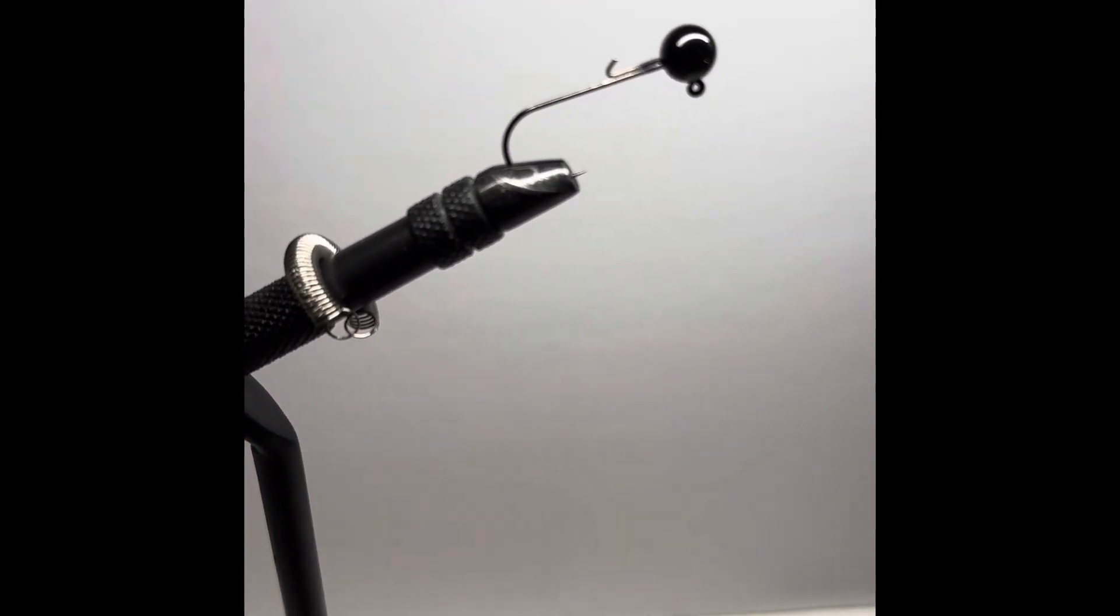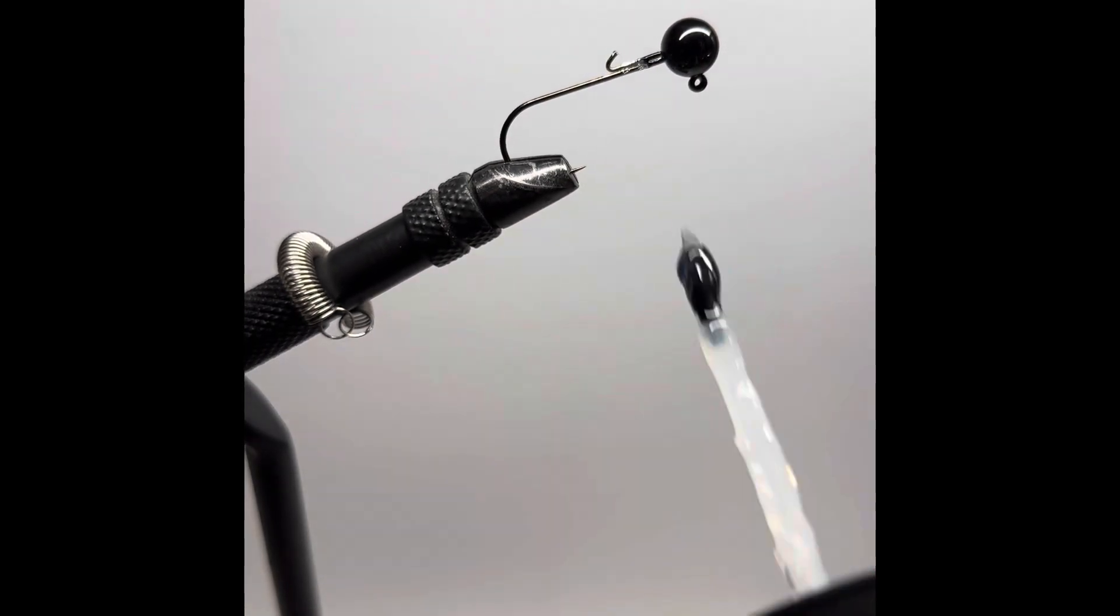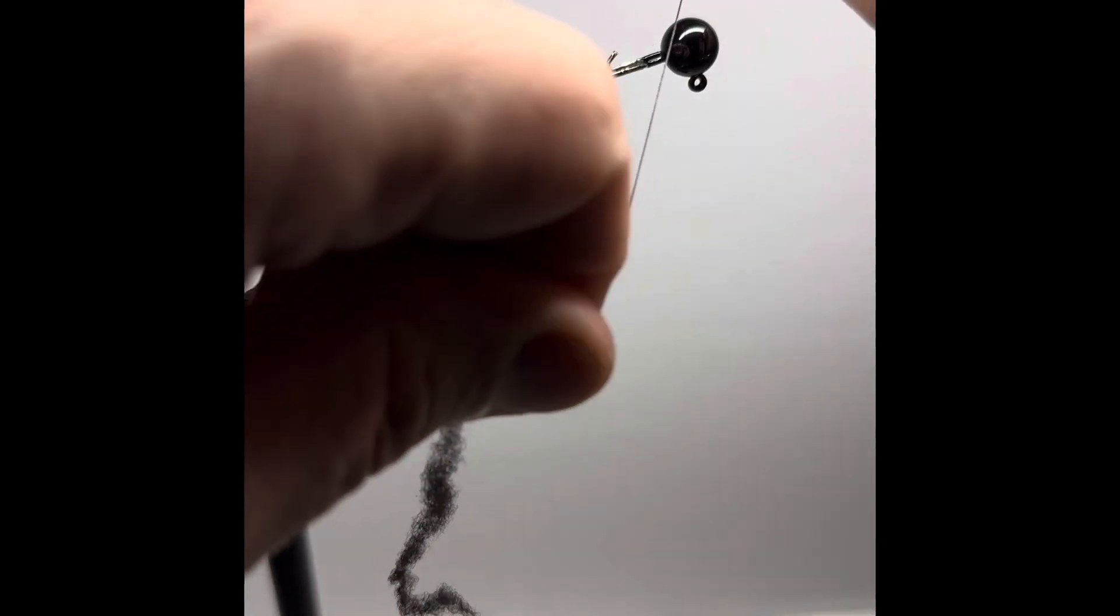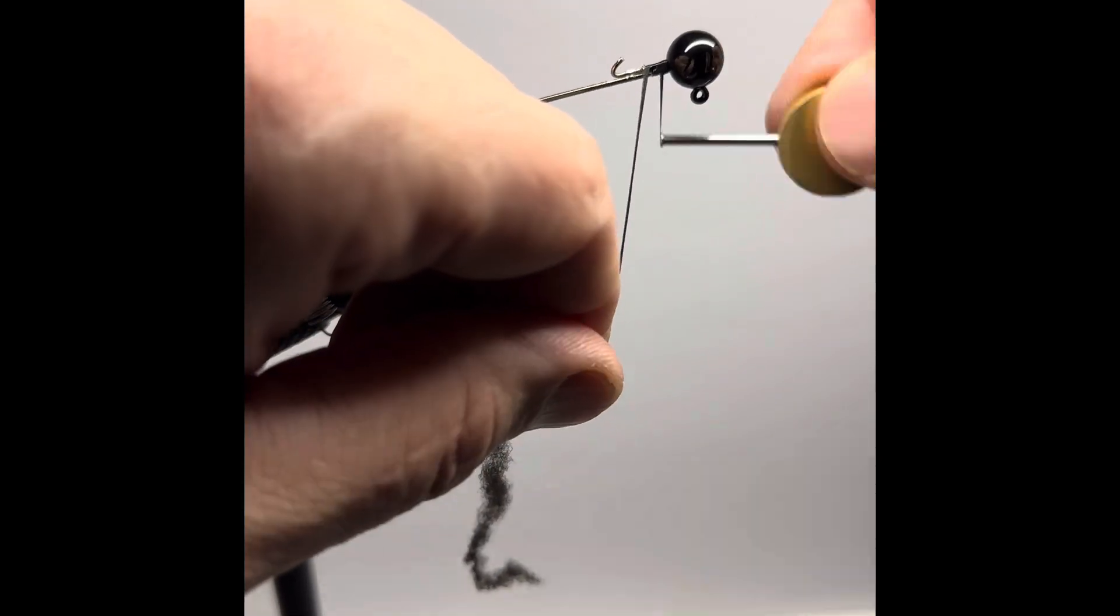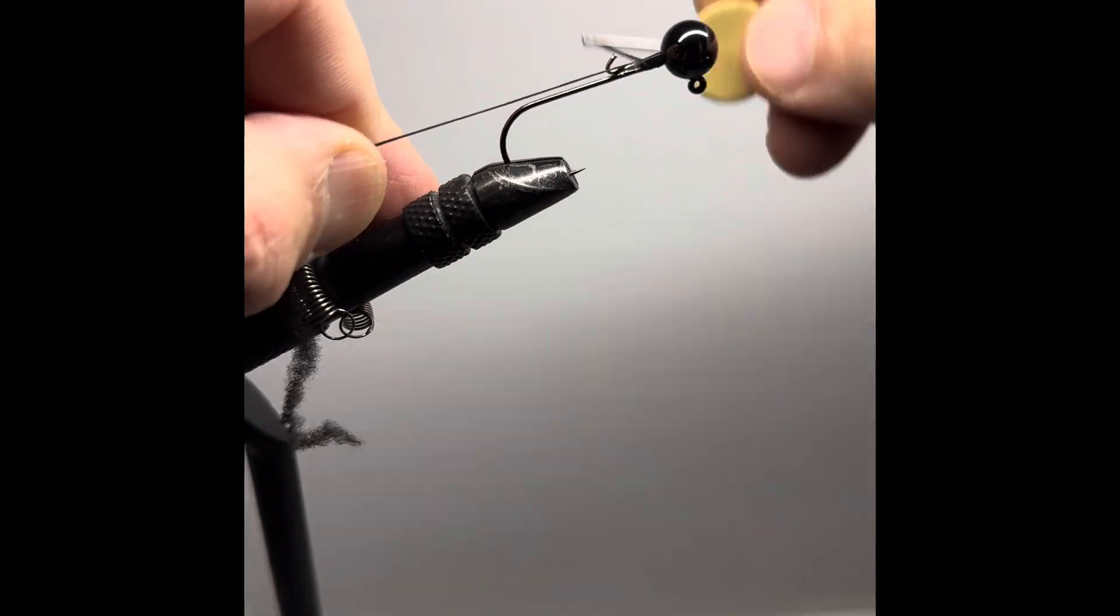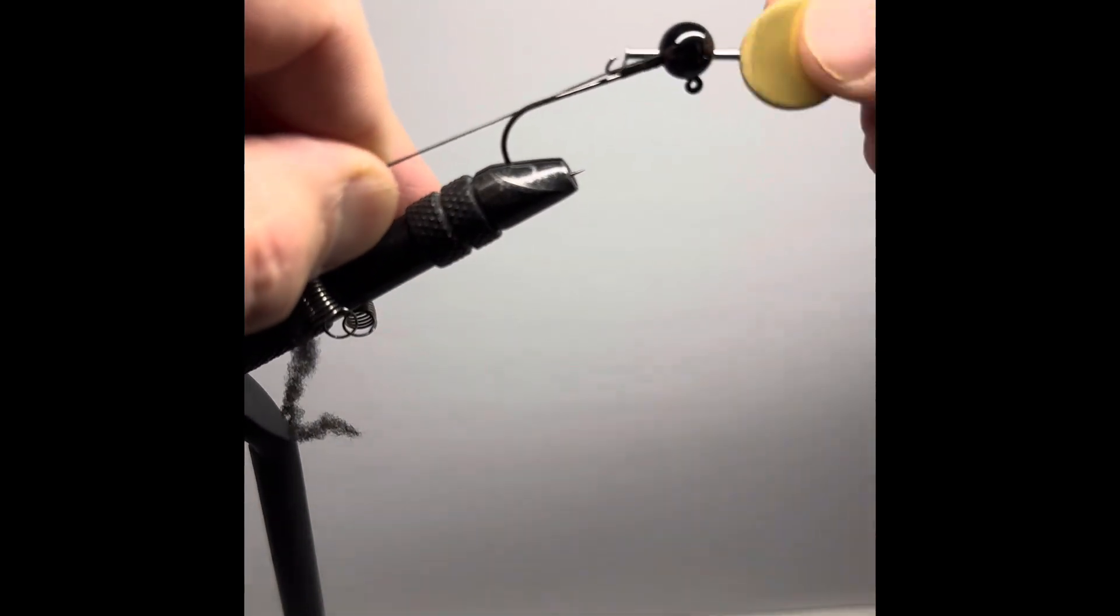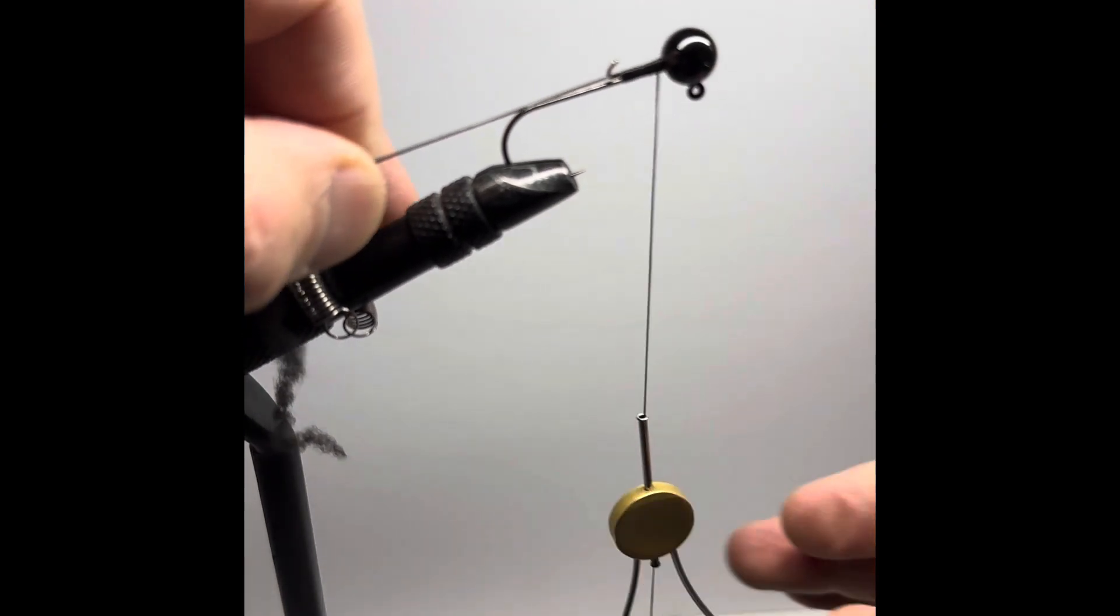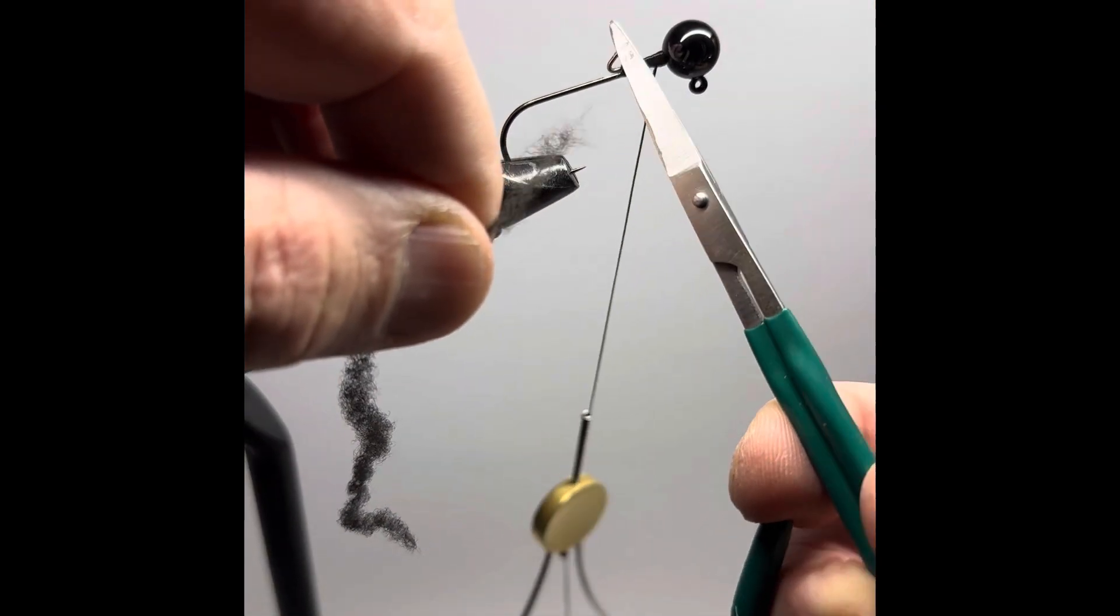We're starting off with a quarter ounce tungsten 2-aught jig. We're going to start off with a little bit of adhesive on the shank just to get that thread to stick a little bit better. We're going to be starting off with some black 200 denier thread. We're going to tie it down and then tie back up to the hook shank and cut that tag end off.